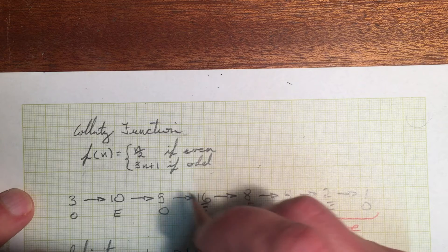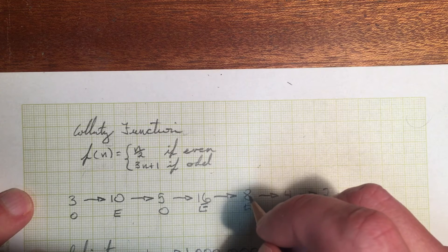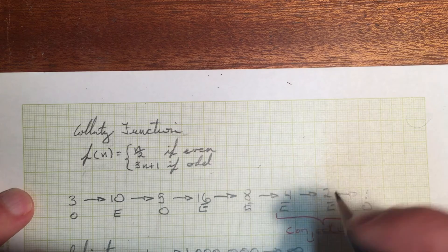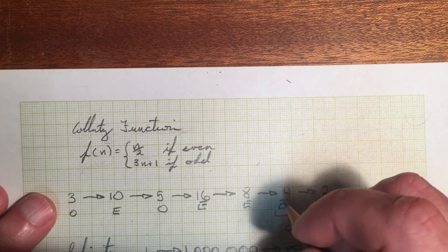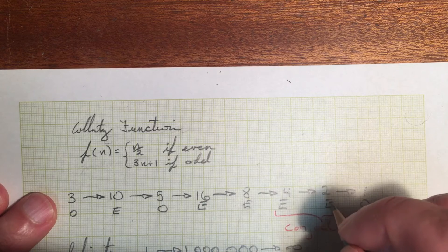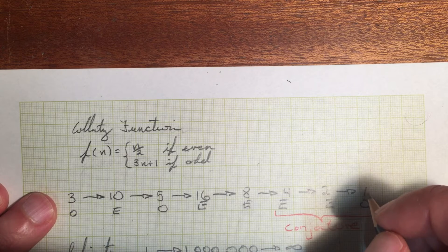So now we have an even number, so we divide by two. Sixteen divided by two is eight. Eight is even as well, so we divide by two again, we get four. Four is even again, we divide by two, get two. Two is even, and then we get one.